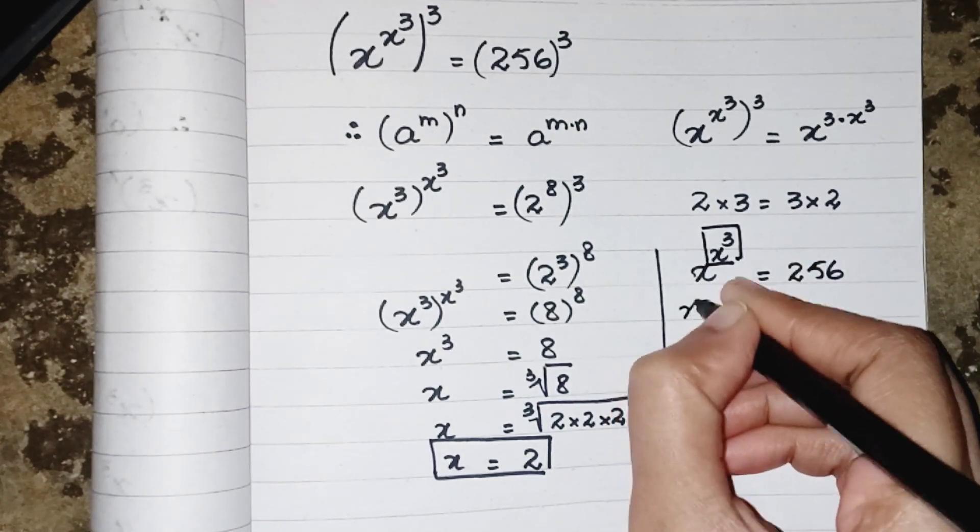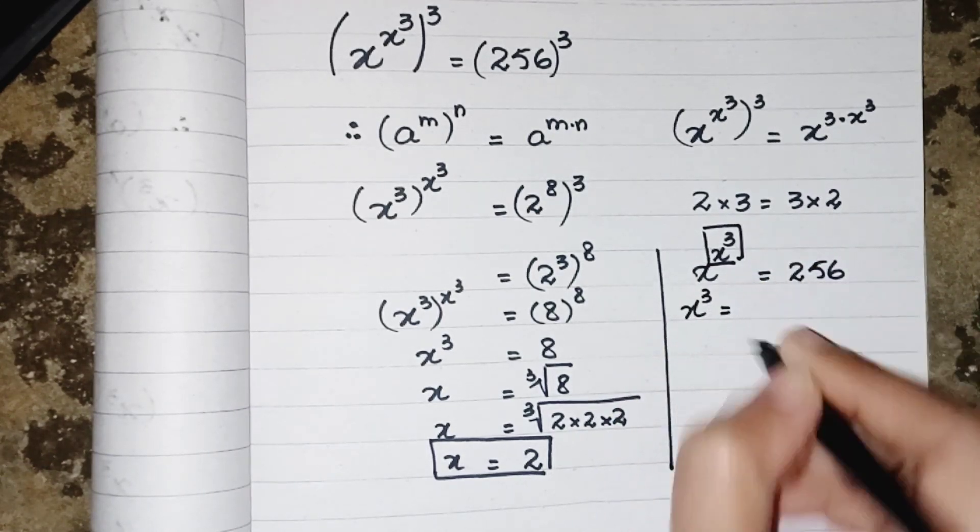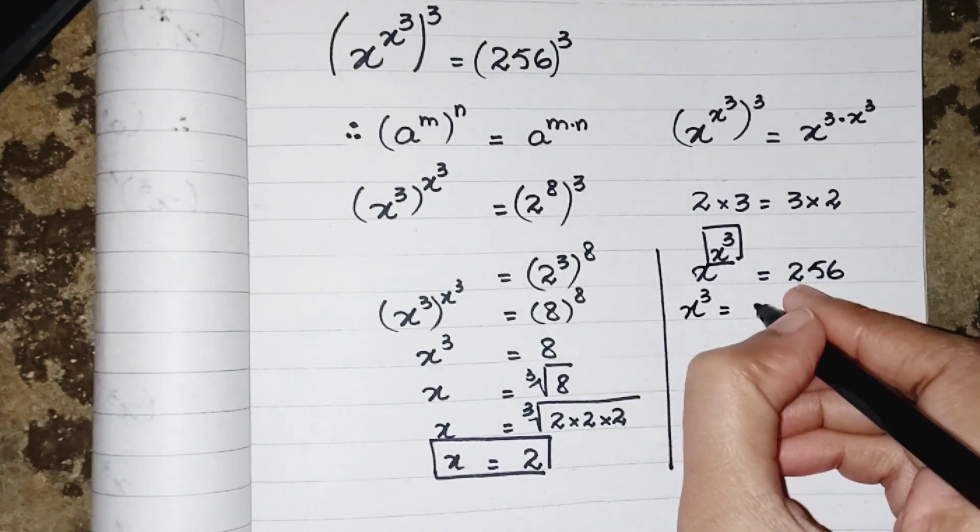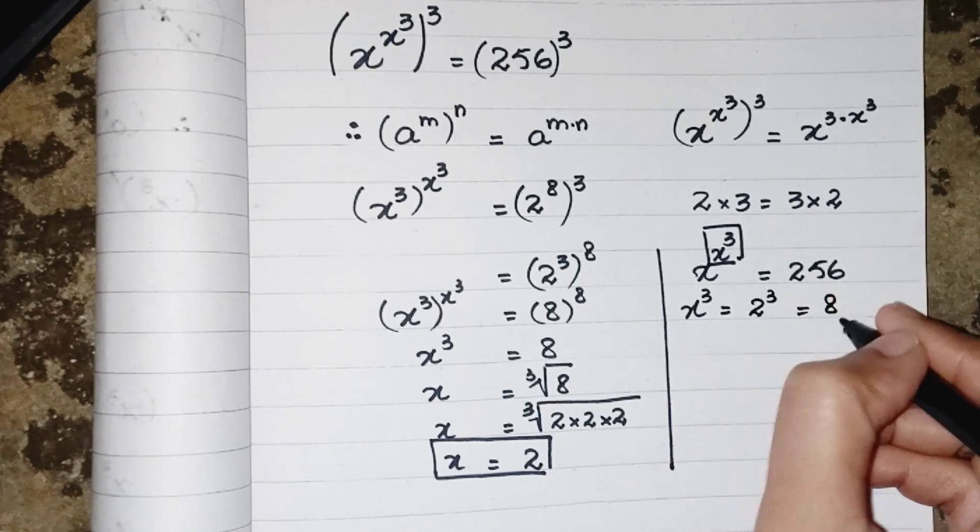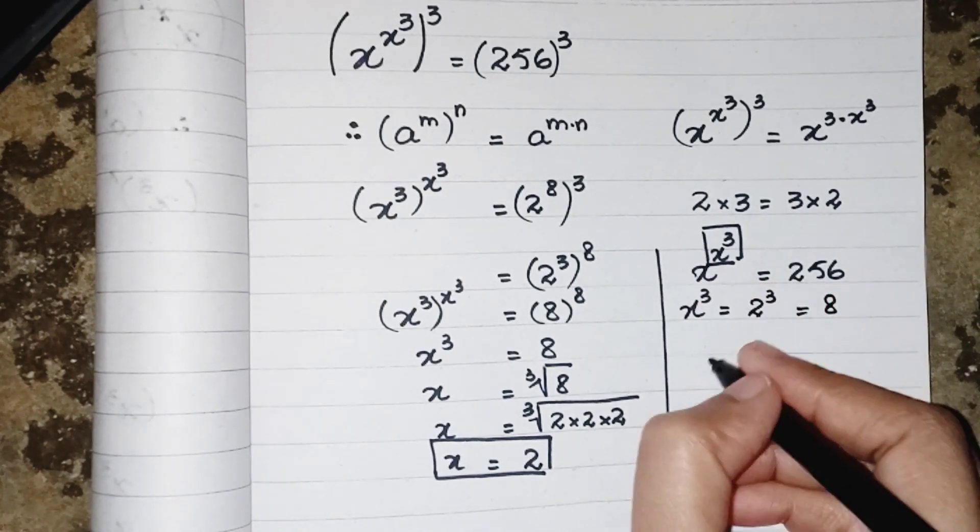X power 3 will result as 2 to the power 3, which is equal to 8. 2 to the power 3 means 8.